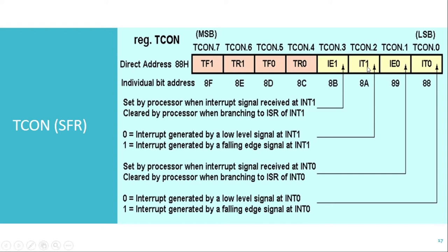The same is the case with external interrupt 1. The IT1 bit is for external interrupt 1. When this bit is 0, a low level signal will generate an interrupt on external interrupt 1 pin. Whereas if this bit is 1, a falling edge signal on external interrupt 1 pin will generate an interrupt. The next bits are IE0 and IE1. IE is used to identify whether an interrupt has occurred or not.